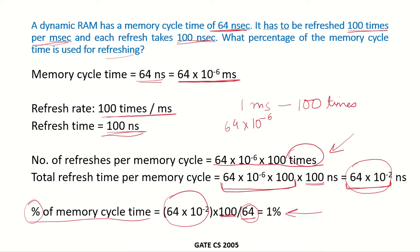So this gives us 1%. That means 1% of the memory cycle time is used for refreshing.